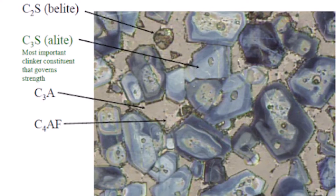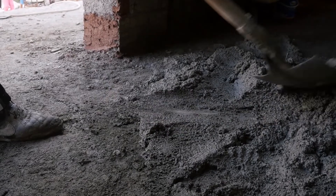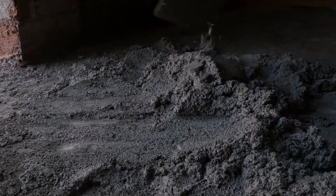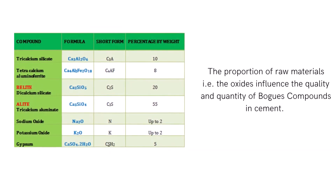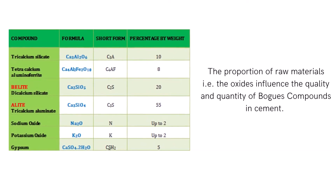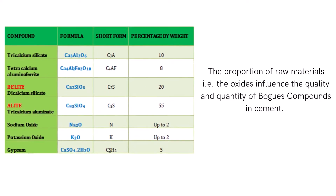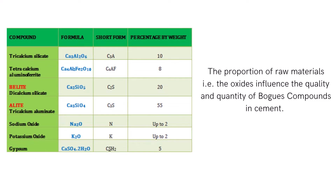These Bogue compounds are the secret recipe which, when reacted with water, makes the cement harden or set. The basic chemical composition of cement — that is, the Bogue compounds — are given in the table. For convenience, they are given in short forms as shown in the table. The significance of each compound is discussed in terms of the percentage by weight.